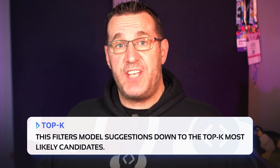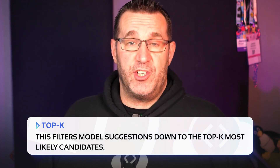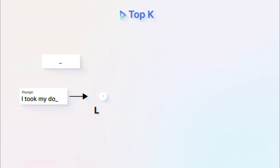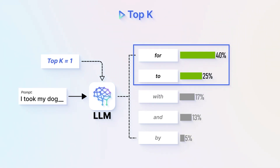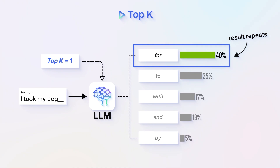Top K filters model suggestions down to the top K most likely candidates, and it's an integer. By setting a value for K, you're instructing the model to consider only the K most likely tokens. If you set a top K of three, you're saying only look at the three best tokens. If you set it to one, you only want the very best token and want your results to be repeatable. Set it to 50, and it will pick from 50 different results, giving you some diversity. Top K in general isn't as important as top P and temperature, but it's another knob to turn.